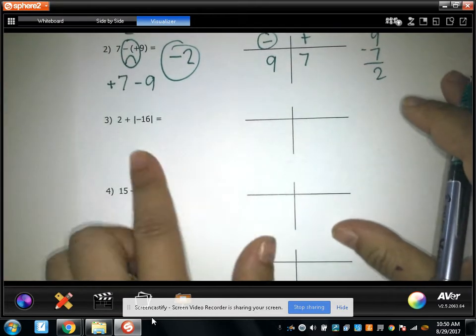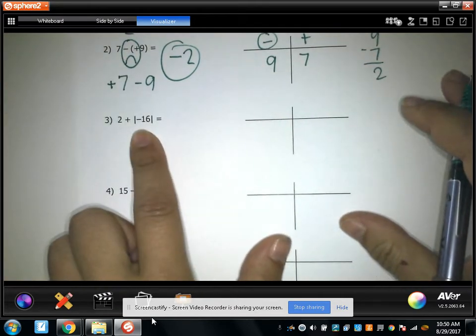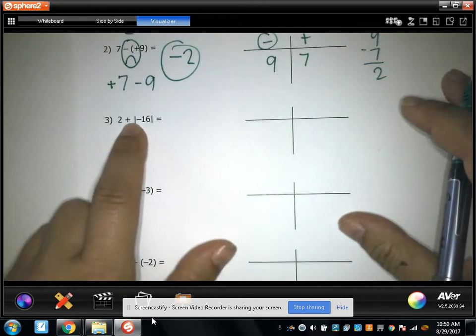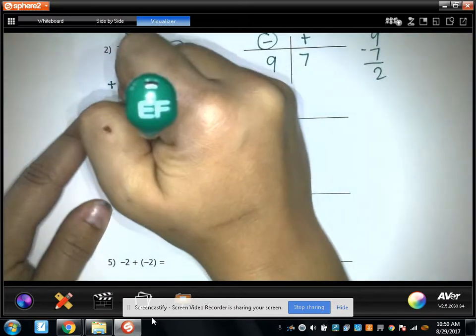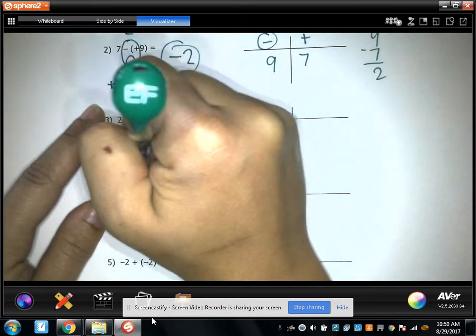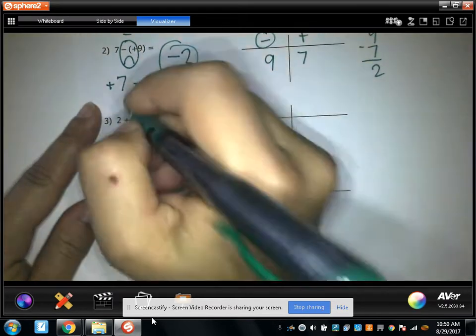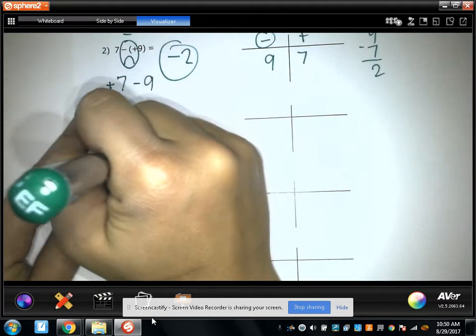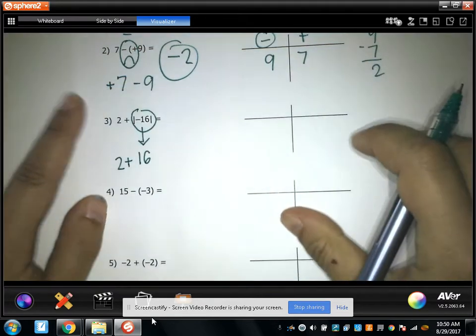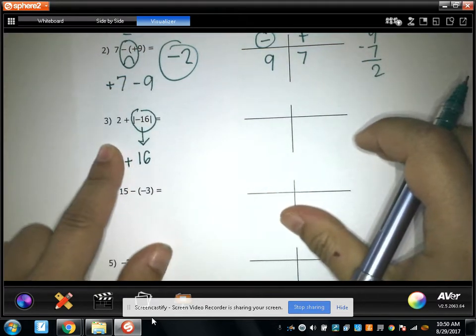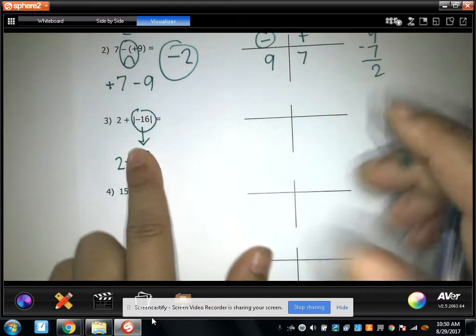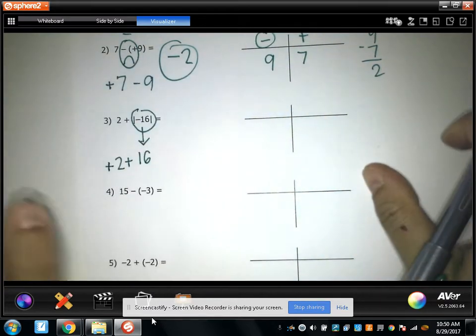All right, next one. This is an absolute value. So I cannot circle these double signs. I have to do the absolute value first. The absolute value of negative 16 is 16. So I have 2 plus 16. This plus is really going with the 16. But this 2 in front is also positive because when there's no sign, it's positive.